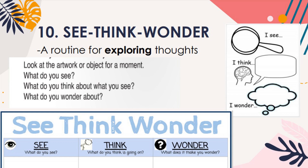You may use See-Think-Wonder if you want students to think carefully about why something looks the way it does or is the way it is. You may use it at the beginning of a new unit to motivate student interest, or near the end of a unit to encourage students to further apply their new knowledge and ideas. For example, look at an artwork or object, then ask learners to observe what they see using the symbol of the lens, express what they think, and then share what they wonder about.